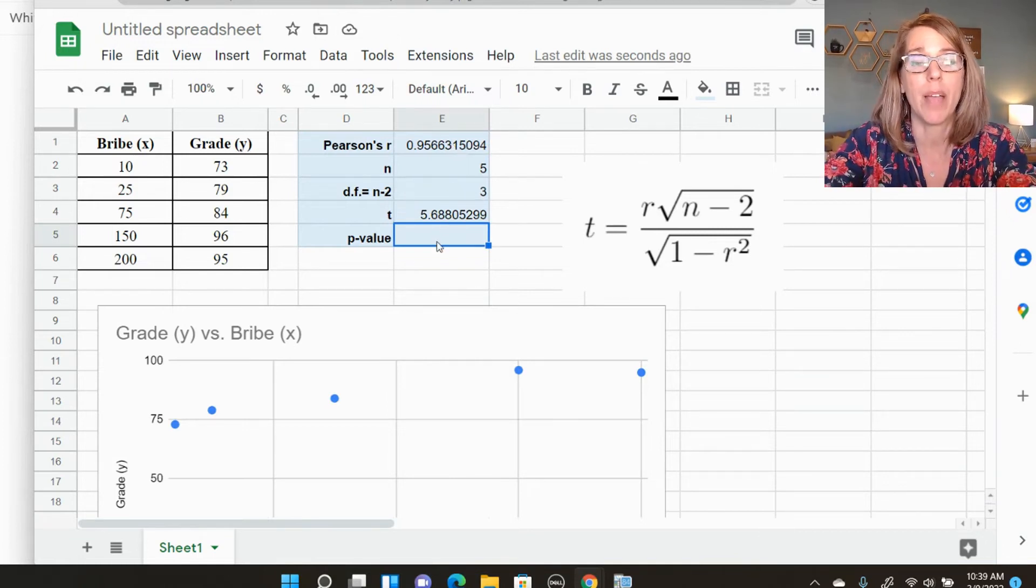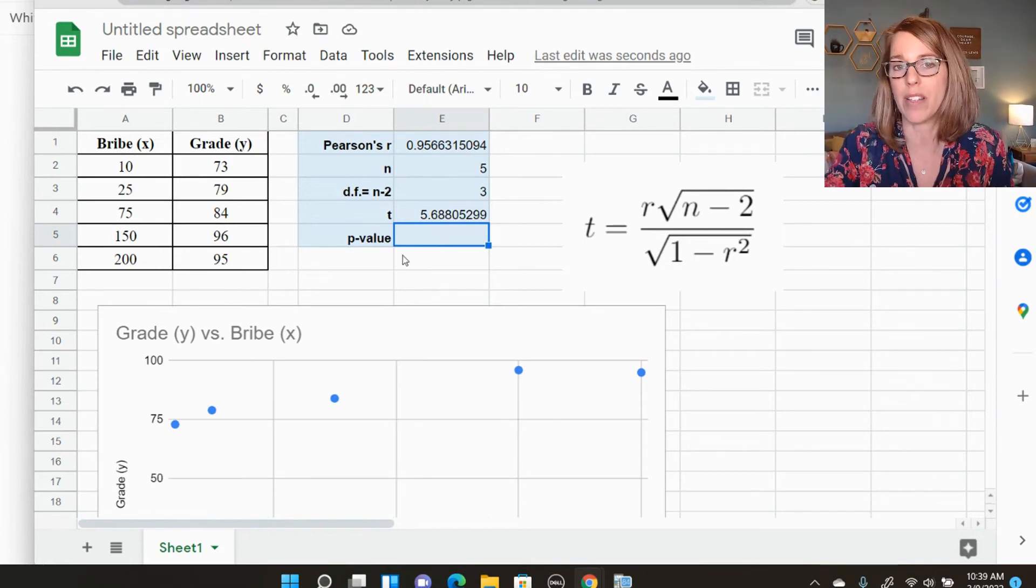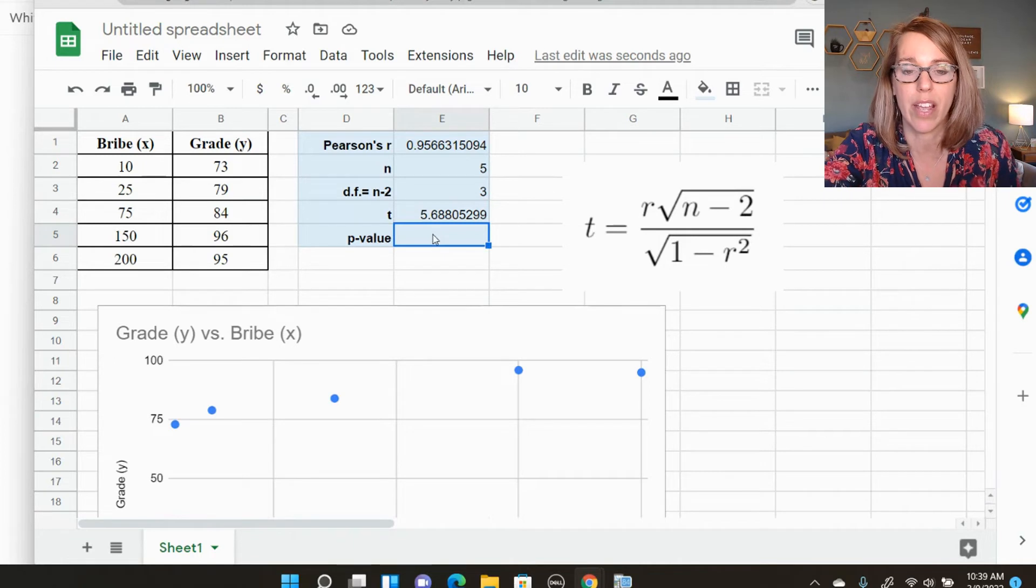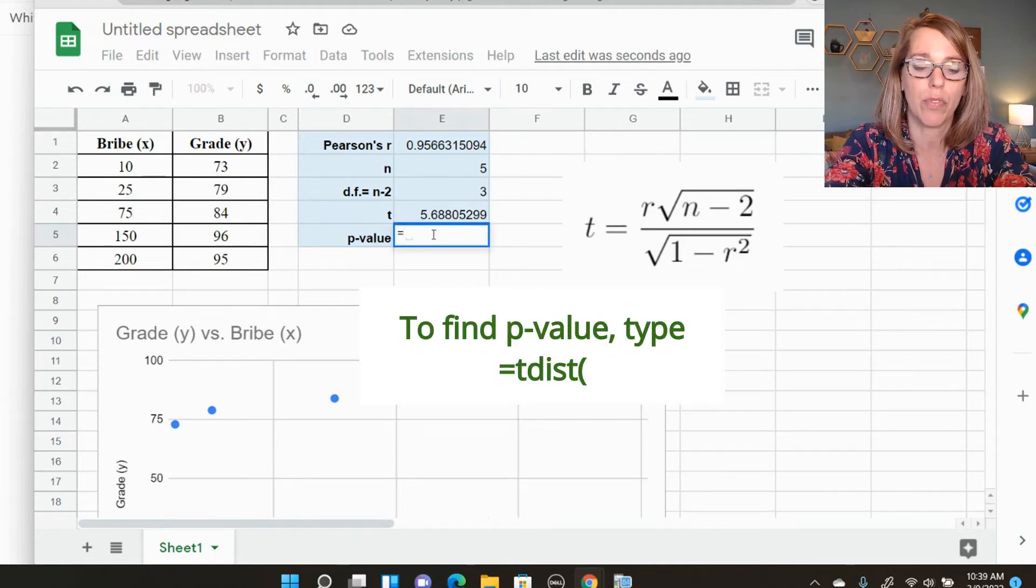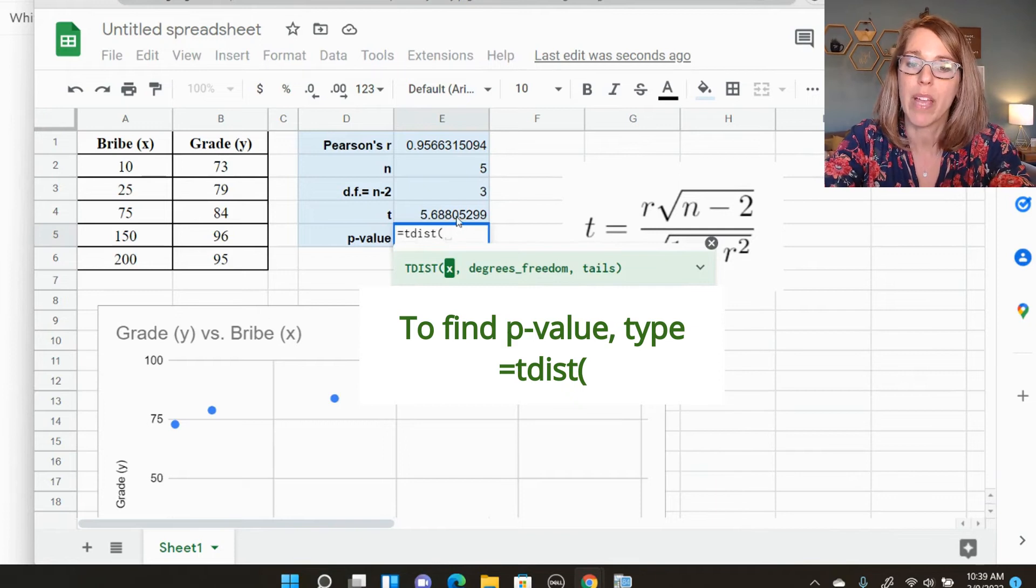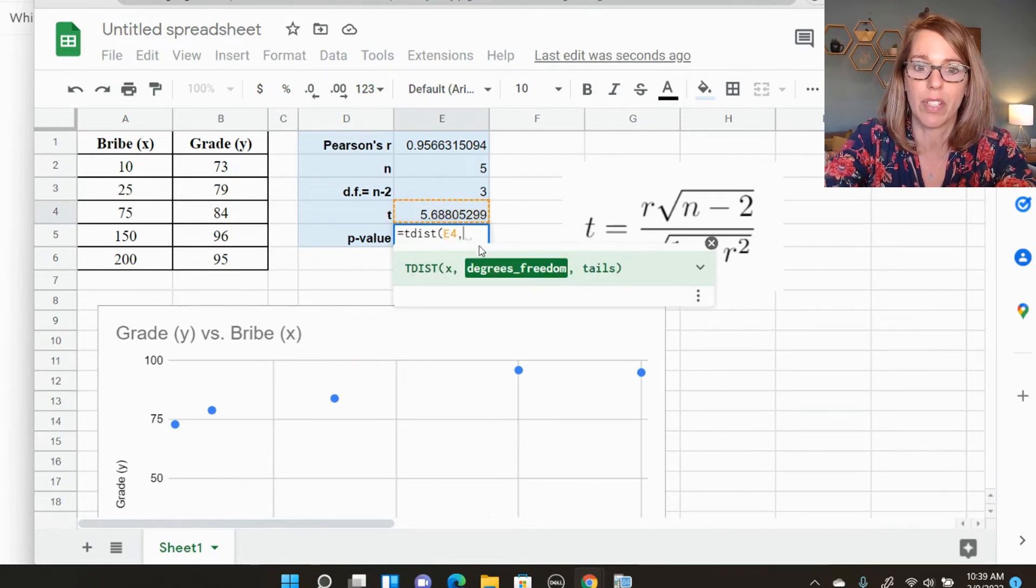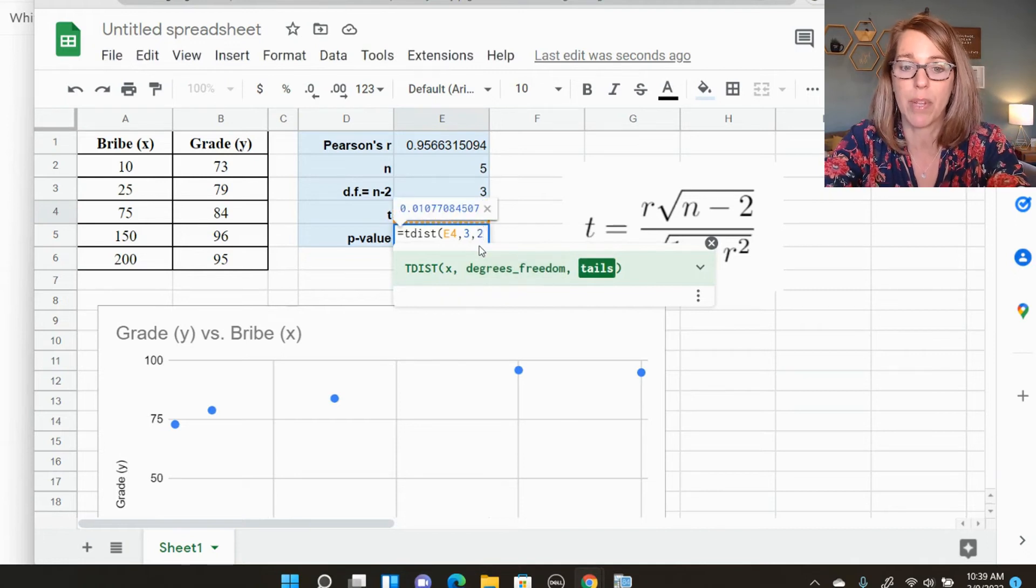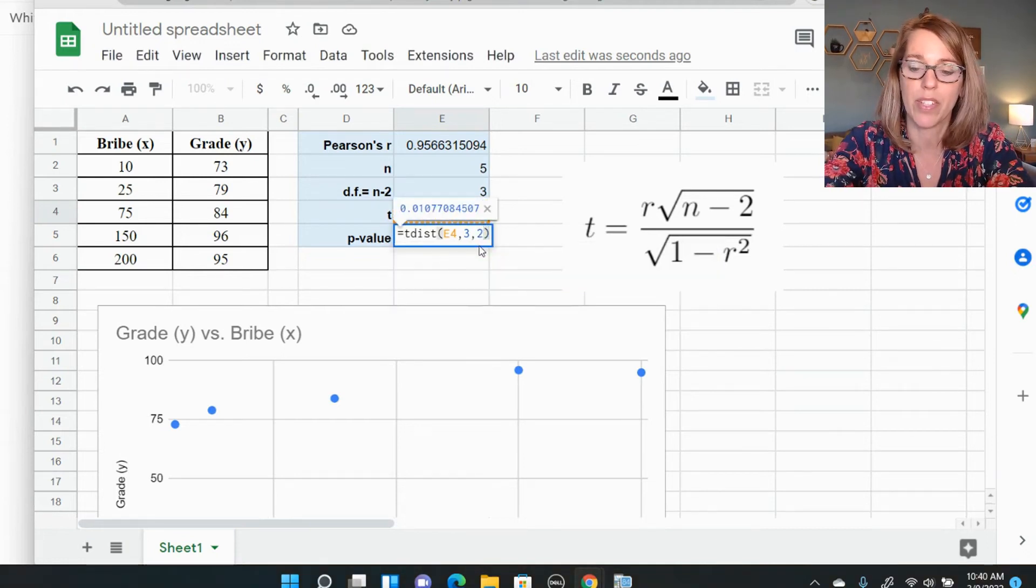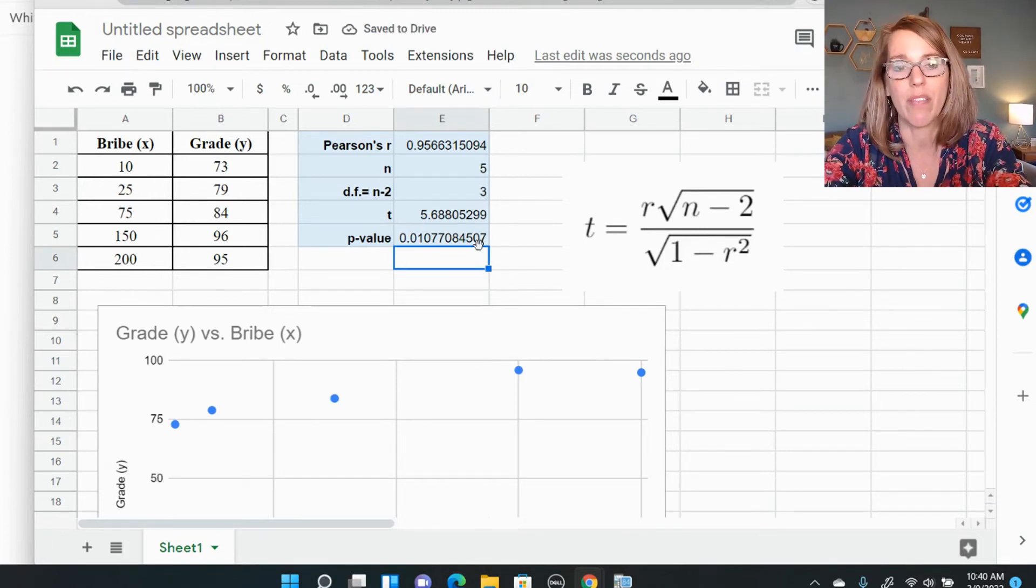Let's do the P value. Next I'm in a T distribution. So I want to convert that T. I want to find the P value associated with that. So the area in the tail, I'm going to go to my T distribution for this. So T D I S T parentheses, my X value is the T value. So I'm going to click on this one and then it said next. So comma degrees of freedom, that was three comma tails. This is a two tail test because of that not equals parenthesis and I get a P value of 0.01077.